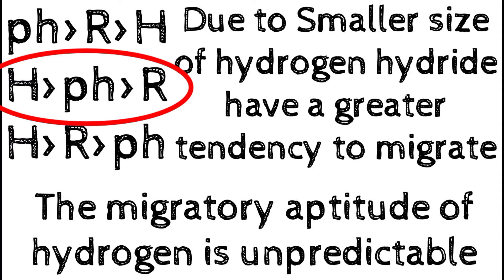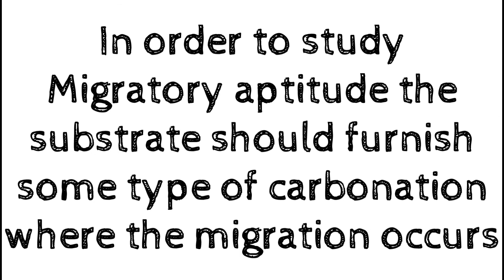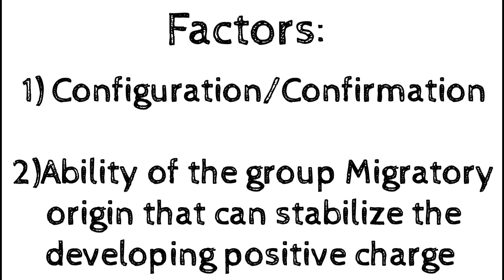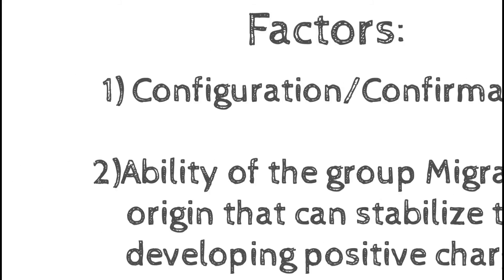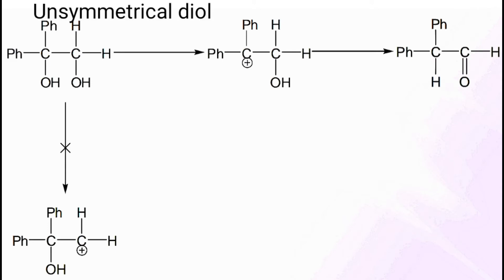We can say hydrogen's size is small, phenyl has resonance, and then alkyl. But there is another thing to look at — the migratory aptitude of hydrogen is unpredictable. To study migratory aptitude, the substrate should furnish some type of carbocation where the group will migrate. The important factors are: first, configurational and conformational factors related to stereochemistry — many rearrangements proceed in a trans manner — and second, the ability of the group at the migratory origin to stabilize the developing positive charge, meaning the carbocation should be more stable.